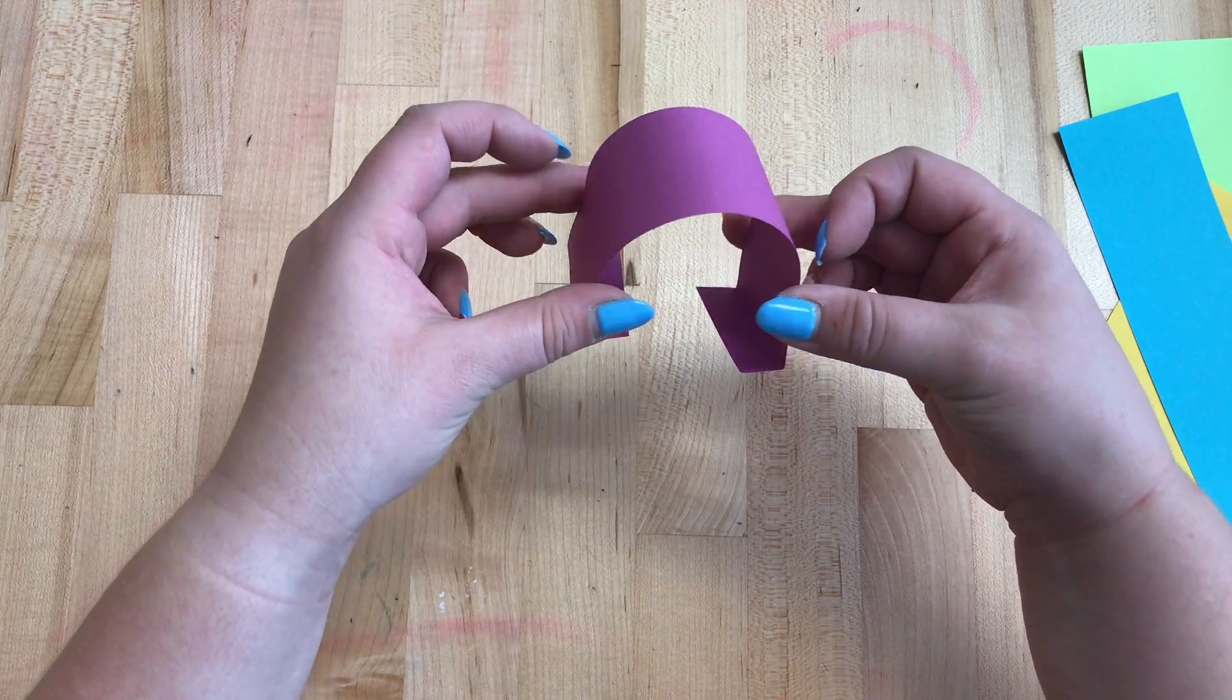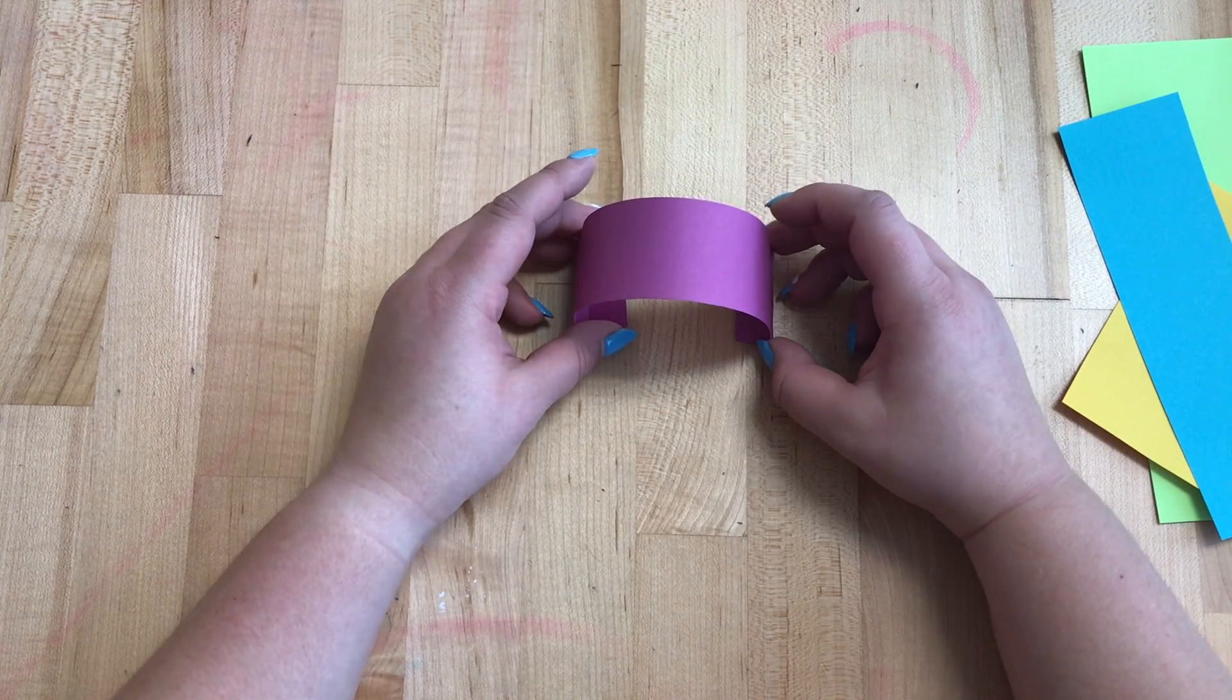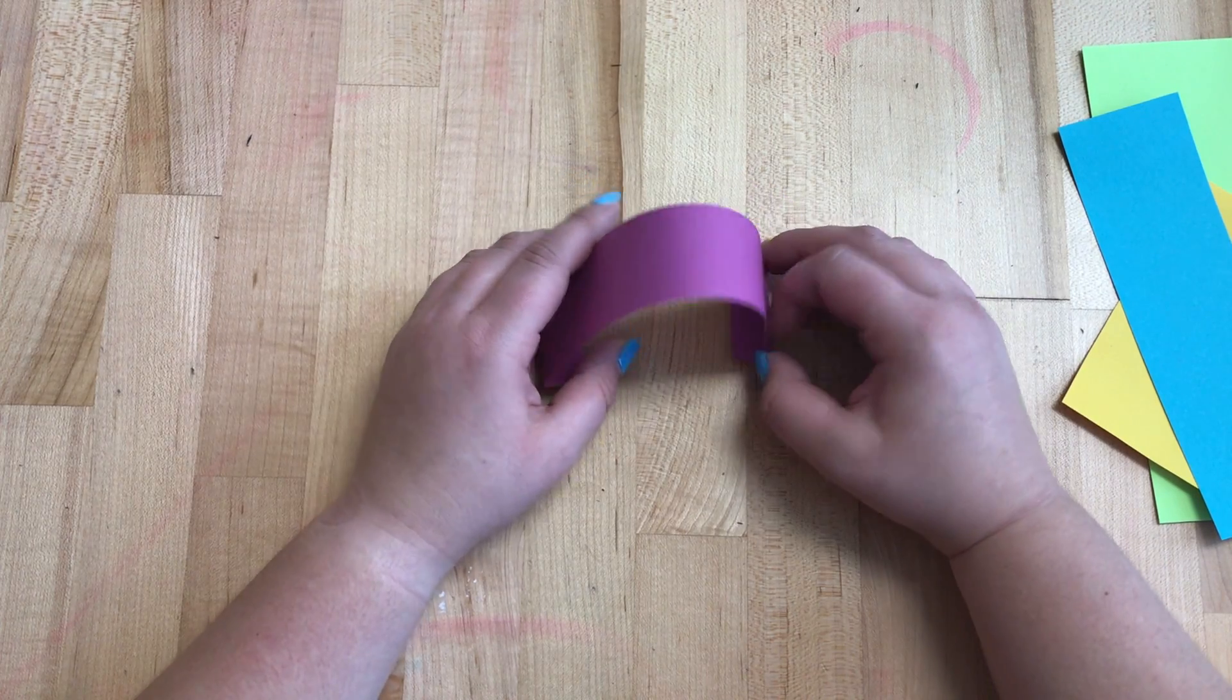This is what you should see. And then we'll glue that down on our paper and it will look like it's popping up. This is an arch. Go ahead and try that.